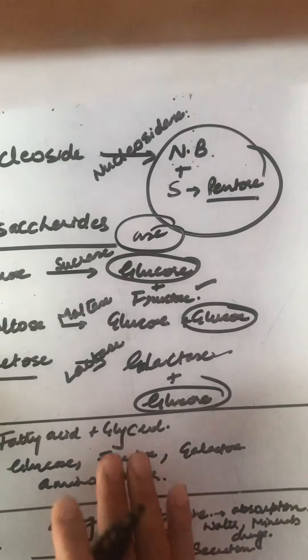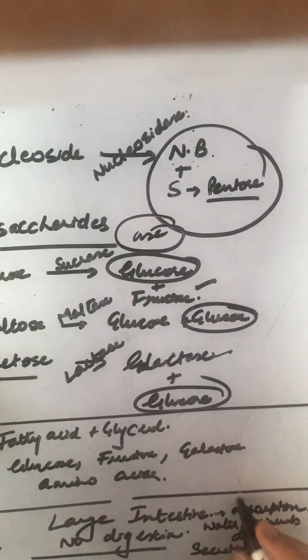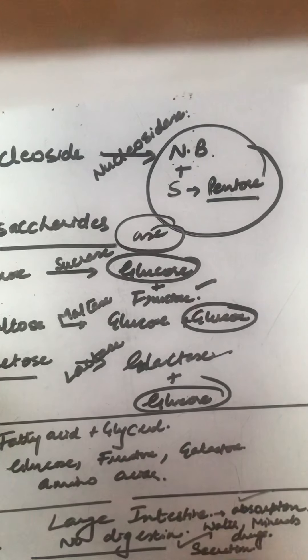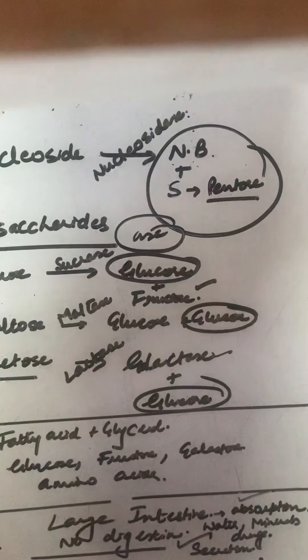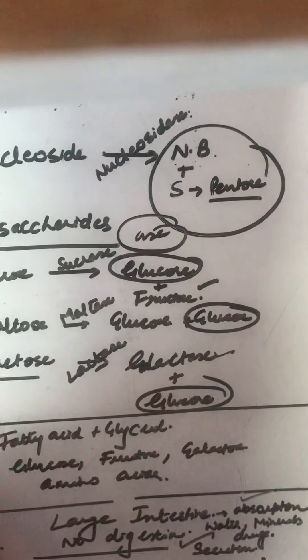So the large intestine is mainly meant for absorption as well as secretion. This is how digestion takes place.